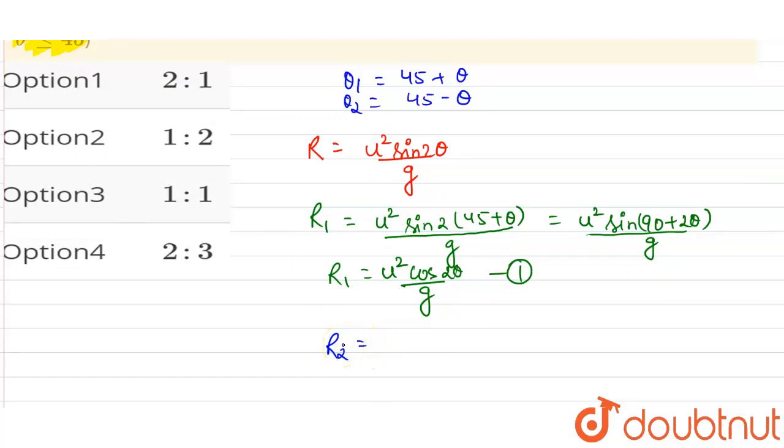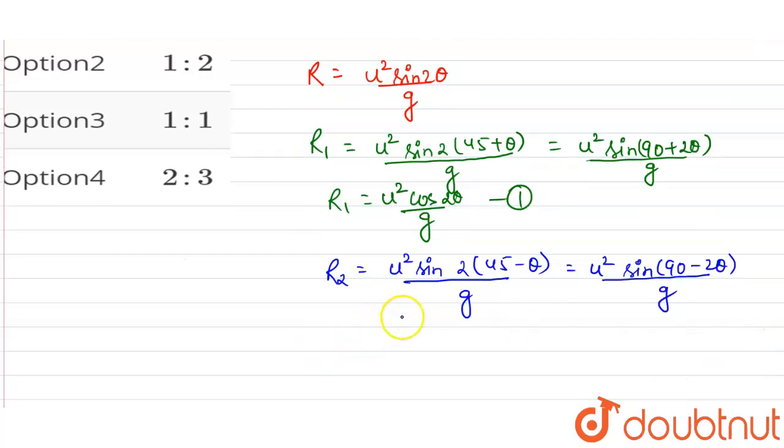Similarly, we can find R₂ range for the second angle of projection, so it will be u² sin(2 × (45° - θ)) / g, so it will be u² sin(90° - 2θ) / g. Now, sin(90° - θ) is cos(θ), so R₂ will also be u² cos(2θ) / g. Let us suppose this is equation number 2.